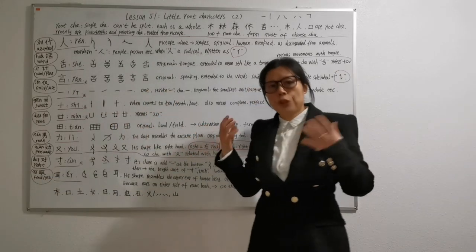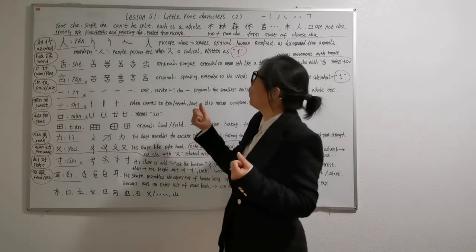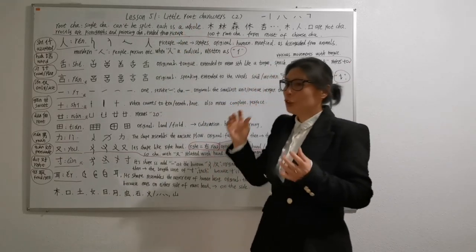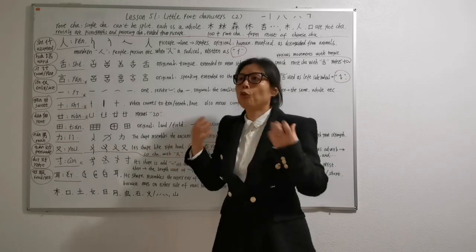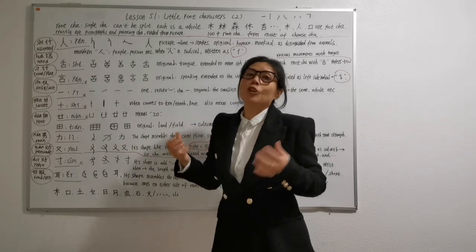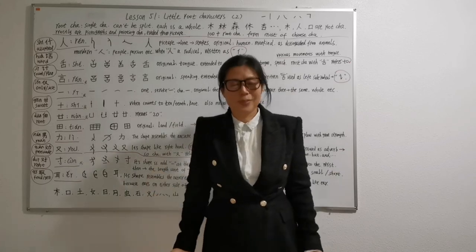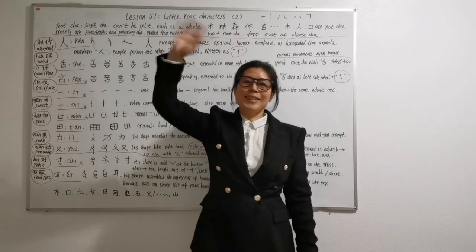Now we have learnt twenty-one little root characters. You can try to use them to form other new characters. OK, see you, zaijian.